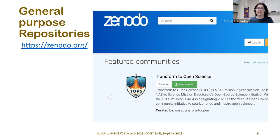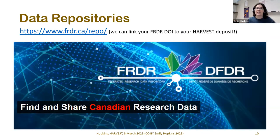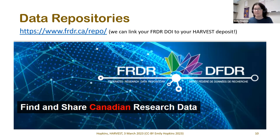Zenodo is a general purpose repository run by CERN — the folks running the Large Hadron Collider. Open science infrastructure is part of CERN's mandate, so as long as they're doing experiments, they'll keep running it. Any community can use Zenodo for different things, which makes it widely used but sometimes hard to search. There are also data repositories like FRDR — the Federated Research Data Repository — which is Canadian, and many folks from USASC have worked on it. If you have a large dataset, FRDR will store and share it and create a DOI, which we can link to in your Harvest deposit.